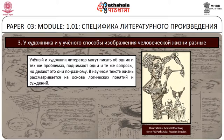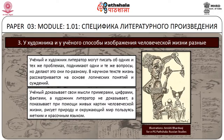В научном тексте жизнь рассматривается на основе логических понятий и суждений. Ученый доказывает свои мысли примерами, цифрами, фактами. А художник, литератор, не доказывает, а показывает при помощи живых картин человеческой жизни. Рисует природу и окружающий мир, пользуясь метким и красочным языком.